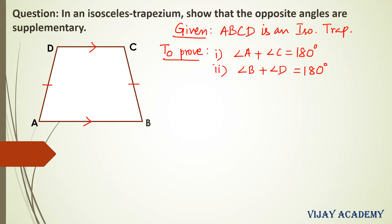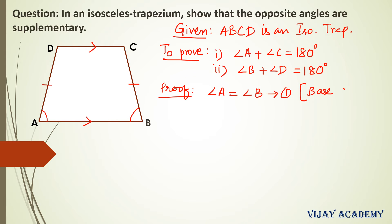Now let us prove that. Let me write the proof. Let us use the properties of an isosceles trapezium. One of the properties of an isosceles trapezium is that base angles are equal. That is, angle A and angle B are equal. So let me write angle A equals angle B. Take this as equation 1; the reason is base angles of an isosceles trapezium are equal.